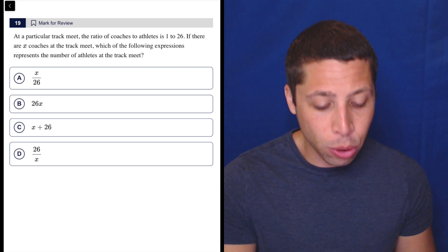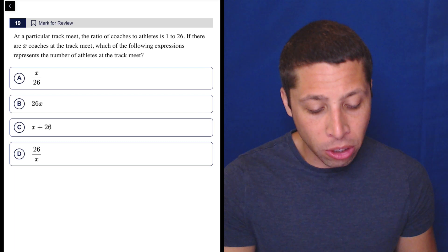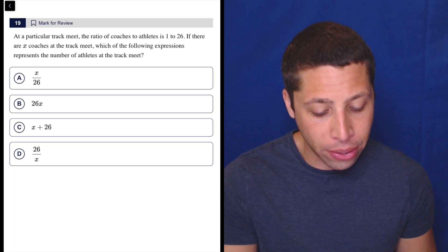So let's just take a look. At a particular track meet, the ratio of coaches to athletes is 1 to 26. If there are X coaches at the track meet, which of the following expressions represents the number of athletes at the track meet?